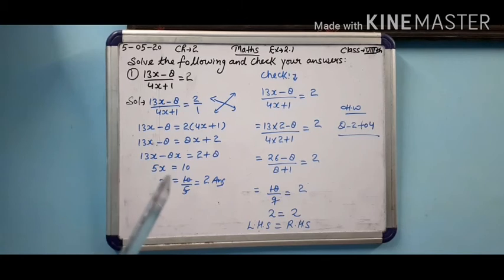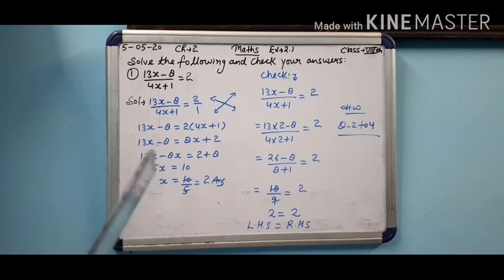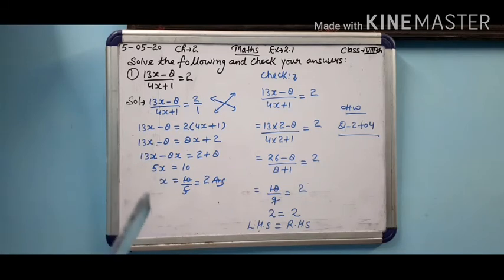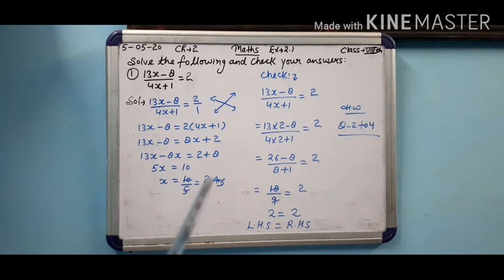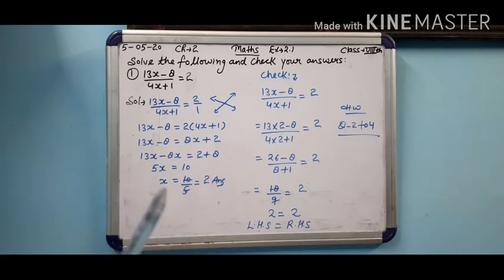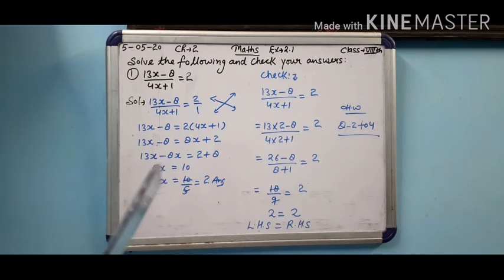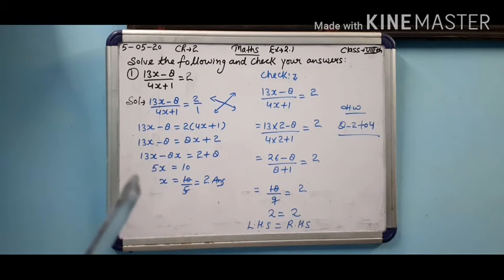Aapko yaad hoga, jab main aapko conditions bata raha tha, toh maine aapko bataya tha: agar koi bhi equation divide mein hogi, ya koi bhi equation agar multiply mein hoti hai toh woh divide mein chali jaati hai. Ab dekho, jinhone yahan par 5x — toh ab 5 ki agar 5 se divide karenge, cancel ho jaayega, x bachega.